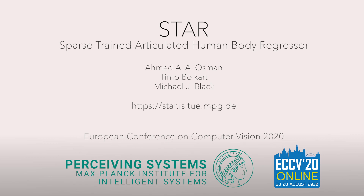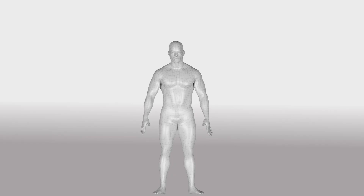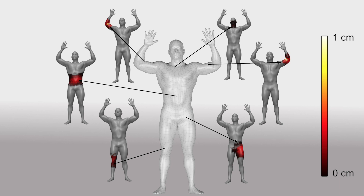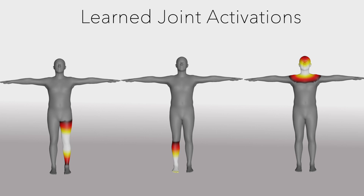We introduce STAR, a compact realistic model of the human body. STAR represents body pose deformations using learned corrective blend shapes that are sparse and spatially local. For each body joint, STAR learns the sparse set of mesh vertices that are influenced by the joint's movement.